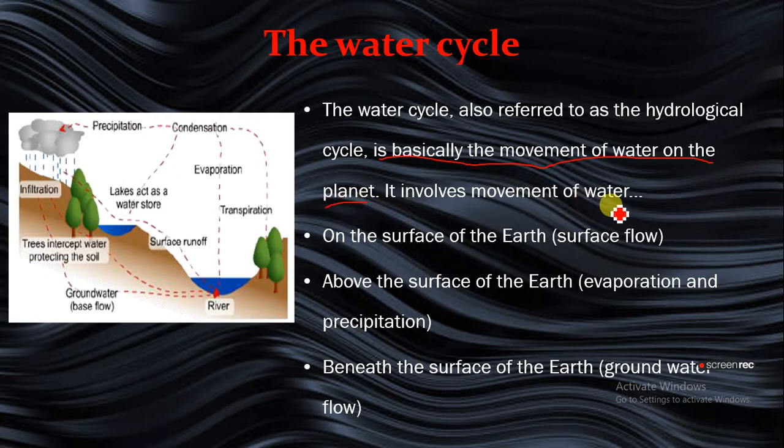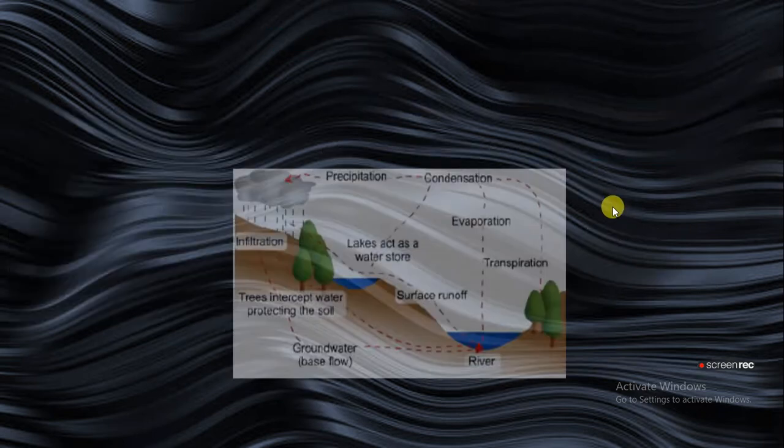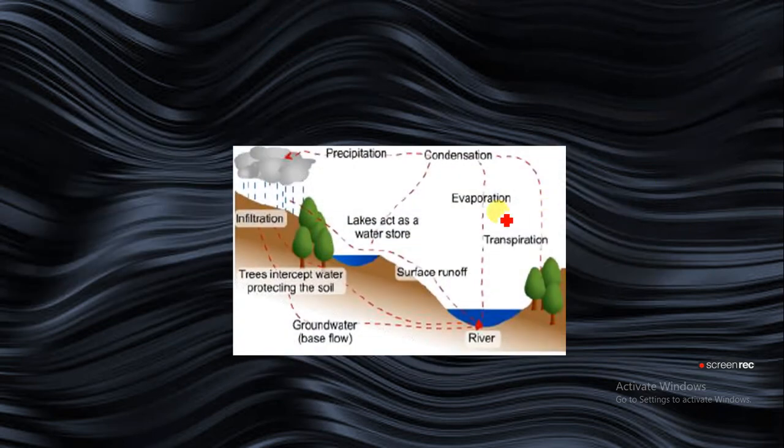It involves movement of water on the planet, the way water circulates from the atmosphere to the earth surface back to the atmosphere. On the surface of the earth you have surface flow, above the surface you have evaporation and precipitation, and beneath the surface you have groundwater flow. You just need to know these processes that enable water to move around the earth surface.